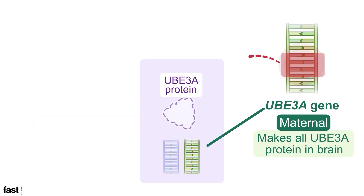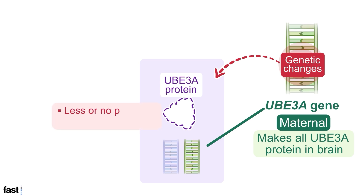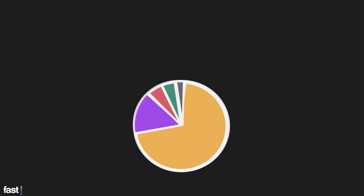So the maternal UBE3A gene is responsible for making all the UBE3A protein in the brain. Changes to the maternal UBE3A gene can result in less or no UBE3A protein in the brain, or the UBE3A protein that is produced may not work properly. These genetic changes are grouped by type and are called genotypes.